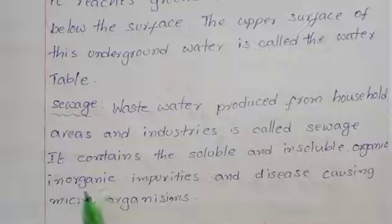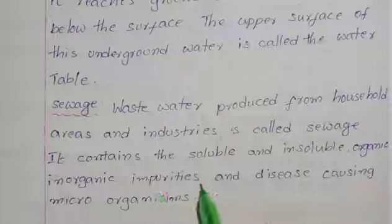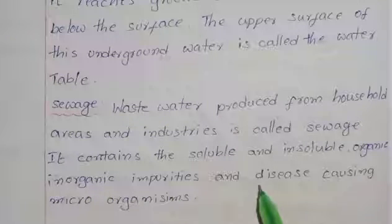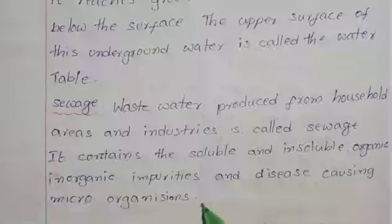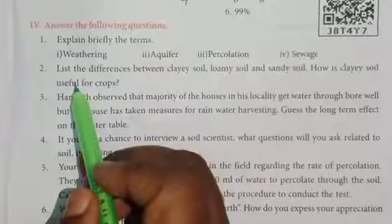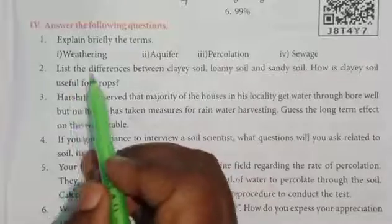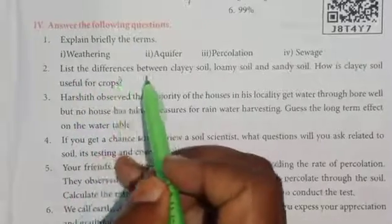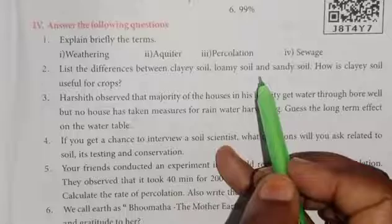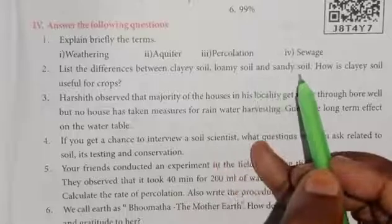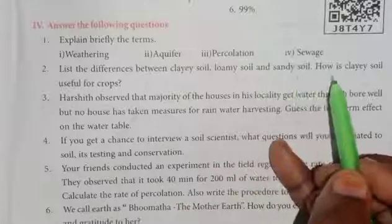4) Sewage: Wastewater produced from household areas and industries is called sewage. It contains soluble and insoluble organic and inorganic impurities and disease-causing microorganisms. List the differences between clay soil, loamy soil, and sandy soil.